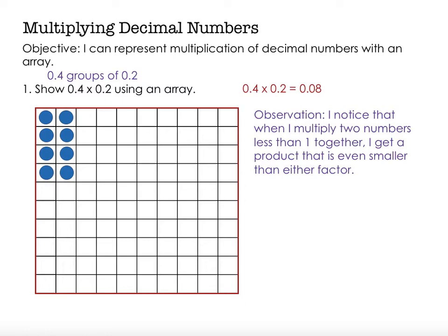I'm going to make an observation. I notice that when I multiply two numbers less than one together, I get a product that is even smaller than either factor. So I have four tenths and two tenths. Both of those numbers are less than one. And when I multiply them together, I get a product that's even smaller than either of those factors.